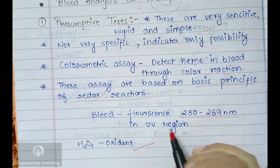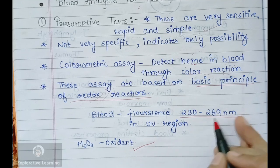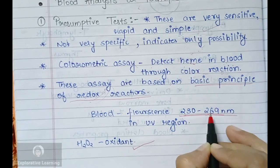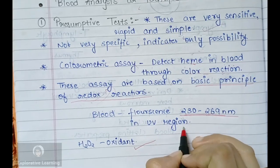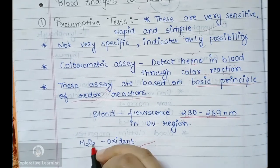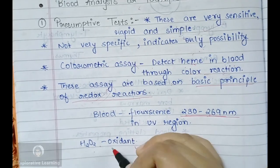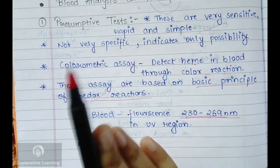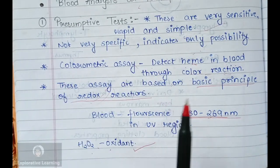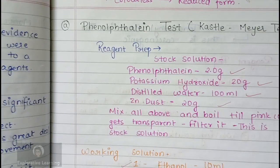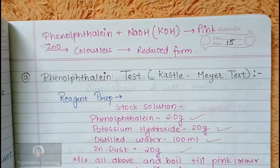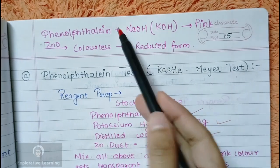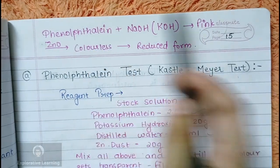The fluorescence of blood ranges between 230 to 269 nanometers in the UV region. H₂O₂ (hydrogen peroxide) is used as an oxidant in the presumptive test, whereas heme acts as a catalyst — this is a most commonly asked question in the UGC NET examination. Now we will begin with the phenolphthalein test, also commonly known as the Kastle-Meyer test.